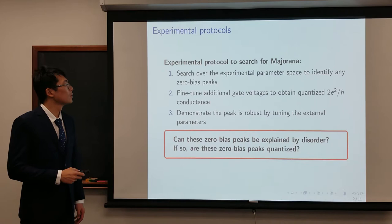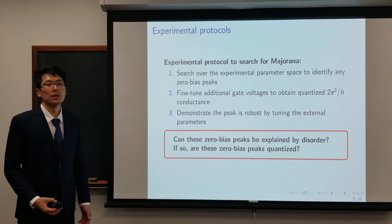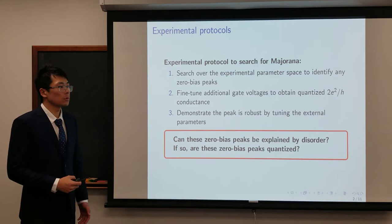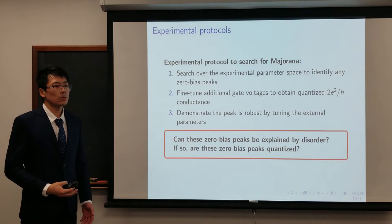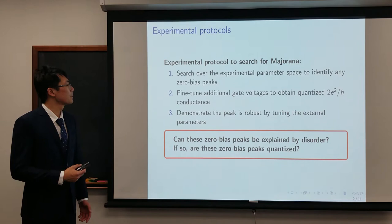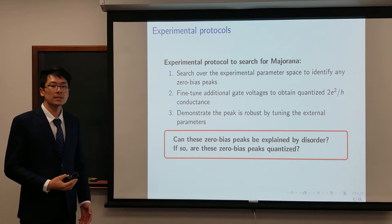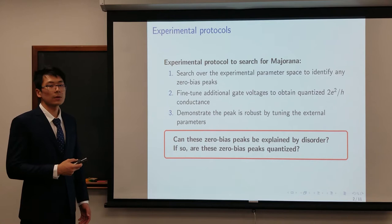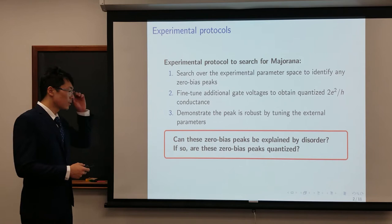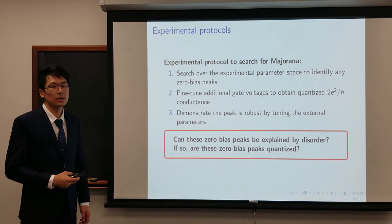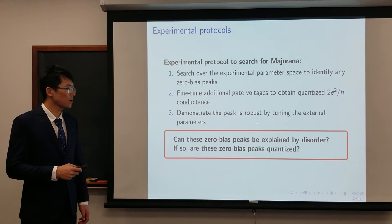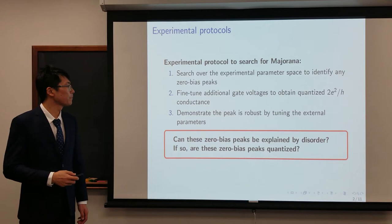We all know that experimentalists have produced many results of zero-bias peaks, and some even report quantized zero-bias peaks, which looks very promising for topological quantum computing. However, when we retrospect the experimental protocol to search for Majorana, we notice that this quantized zero-bias peak does not necessarily indicate the real Majorana. Typically, the experimental platform has so many gate voltages, and they will search over the parameter space to identify any signature of zero-bias peaks. Once a zero-bias peak is found, they will fine-tune additional gate voltages, like the tunnel gate voltage, to obtain a quantized conductance of 2e²/h. And finally, they will change the parameter to demonstrate that the peak is somehow robust. However, in this talk, we want to answer: can the zero-bias peak be explained by disorder itself? If so, are these zero-bias peaks quantized?